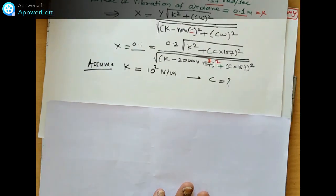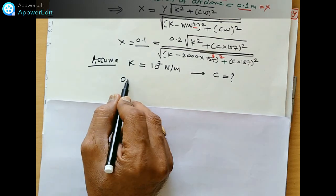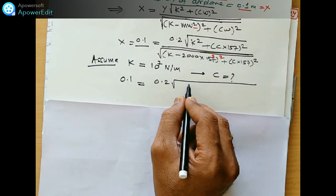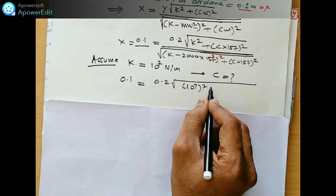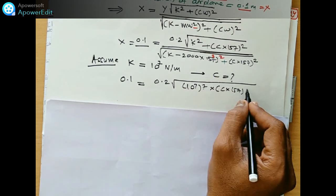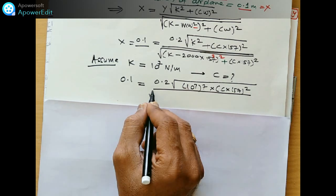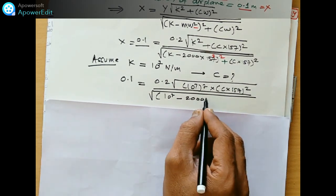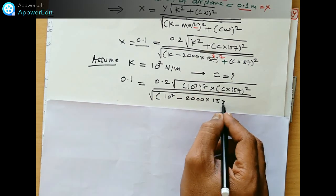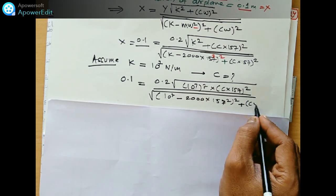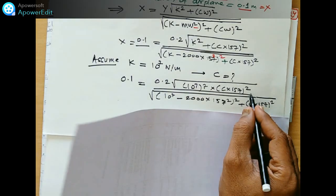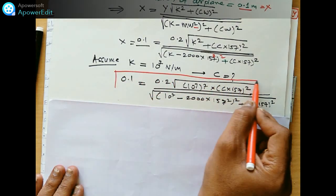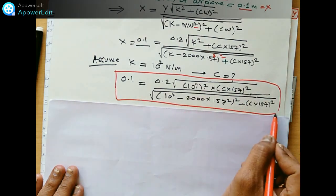We assume k is equal to this much. Then first we have to find out c. C can be determined by putting the value of k in this one. I will write again, 0.1 which is equal to 0.2 square root, k is 10 raised to 7 minus 2000 into 157 square upon k, 10 raised to 7 minus 2000 into 157 square square plus c 157 bracket square.